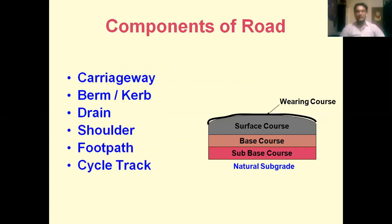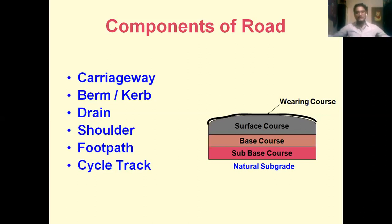The components of a road include the carriageway, the curb or berm at both ends of the carriageway, drainage where rainwater passes through drain spouts, a shoulder, a footpath, and a cycle path.